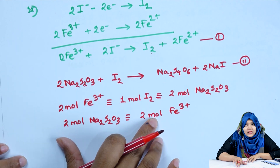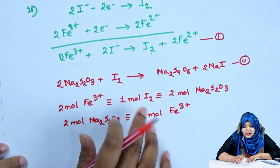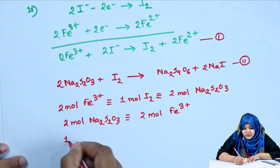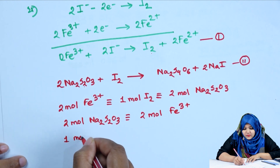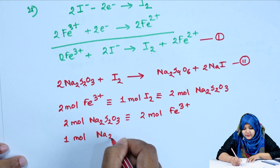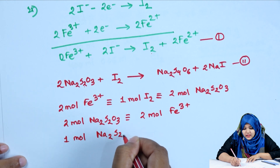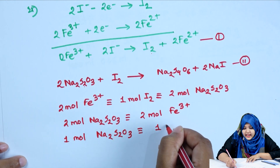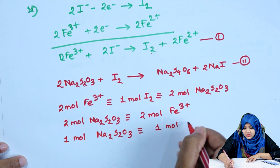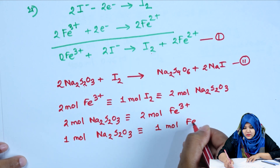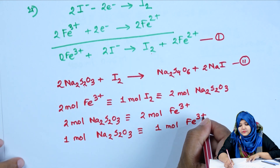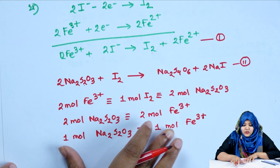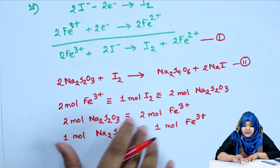Dividing two by two: 1 mol sodium thiosulfate is equivalent to 1 mol ferricyanide. We have now established this stoichiometric relationship.